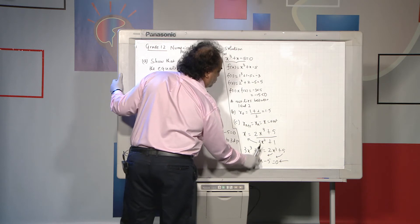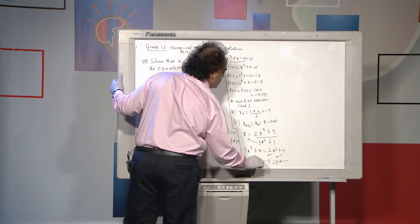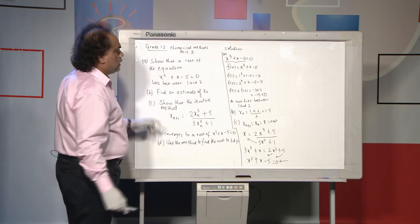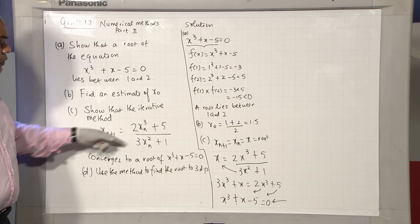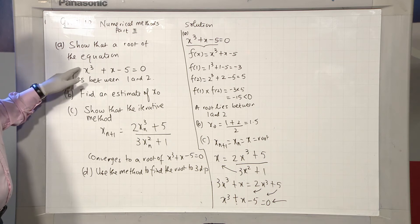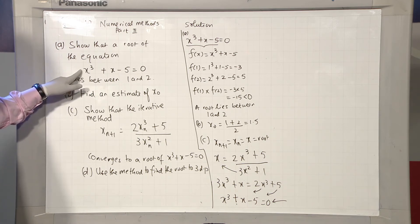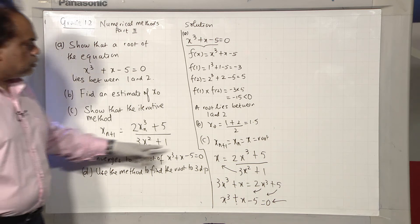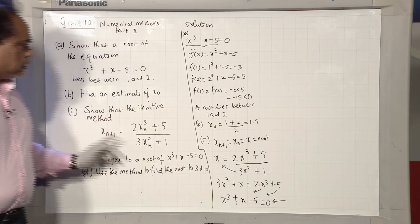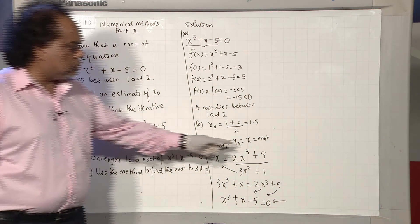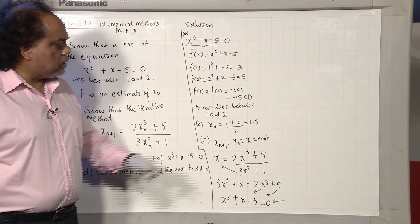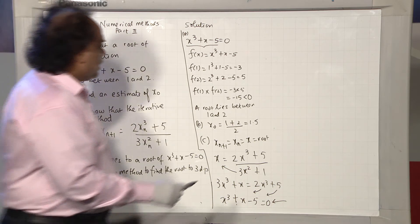So we have proved that the iterative method, this iterative method, if it converges, it will converge to a root of this equation, x³ plus x minus 5. So how did we do that? In simple terms, we replace xₙ₊₁ and xₙ by x, which is the root, because this is what happens at convergence.